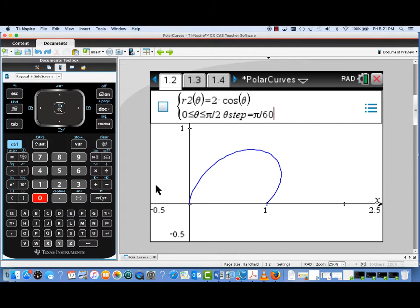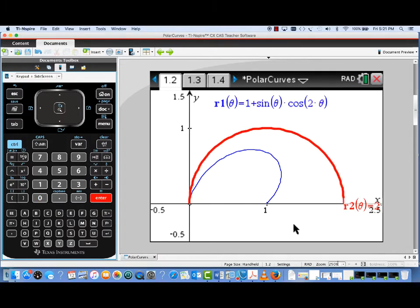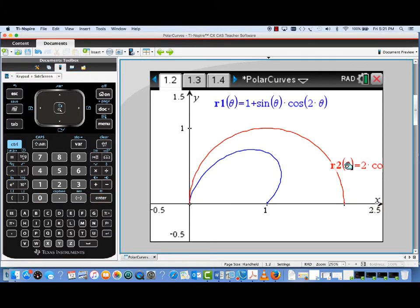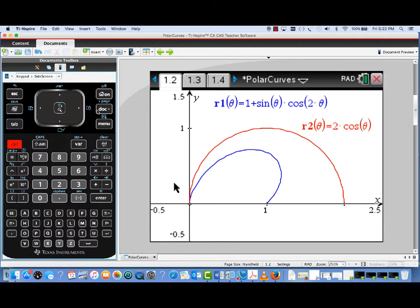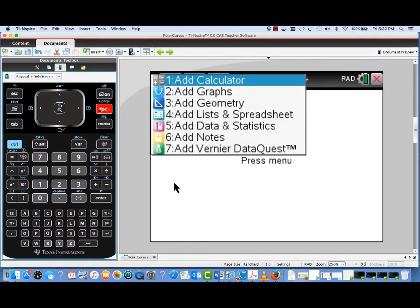And now we're going to go back to our graph entry menu and select another curve. This one we already had entered in. It was R2 of Theta equals 2 cosine Theta with the same range in Theta step.